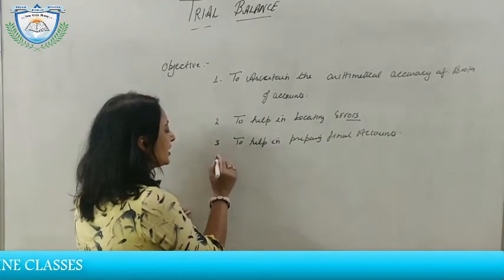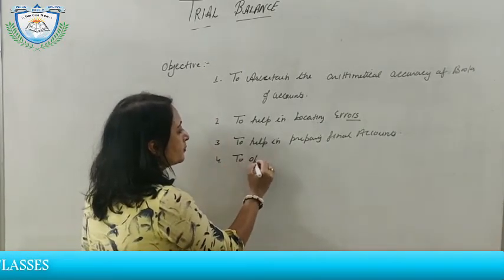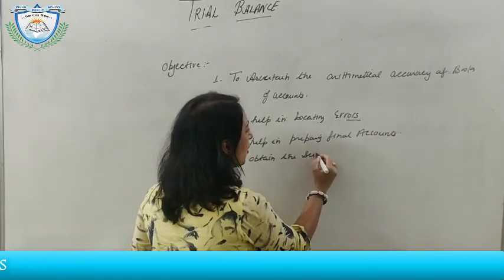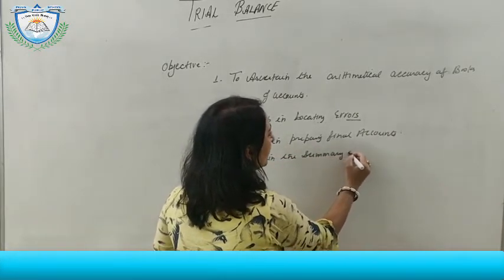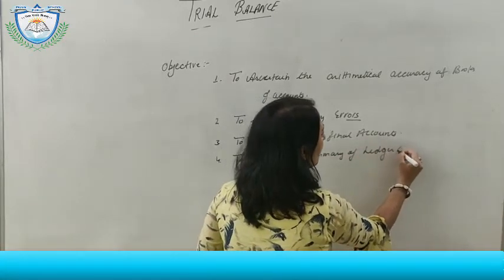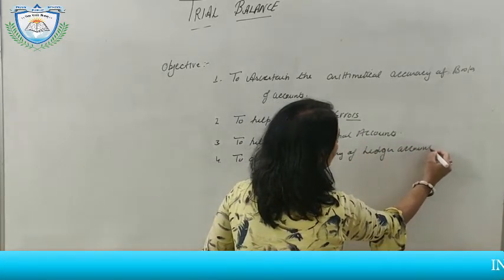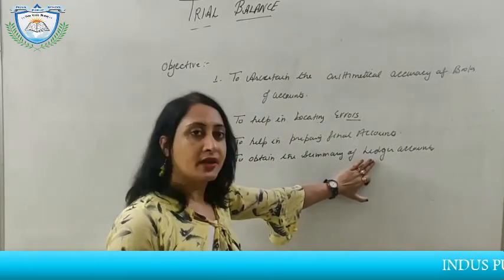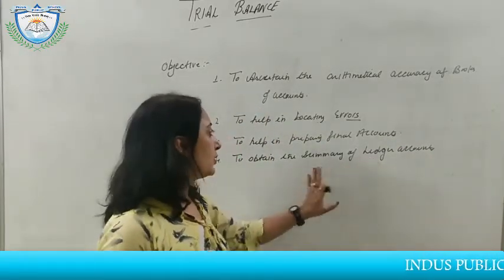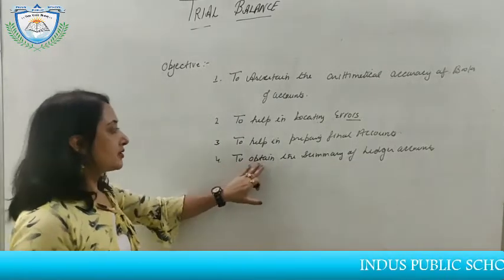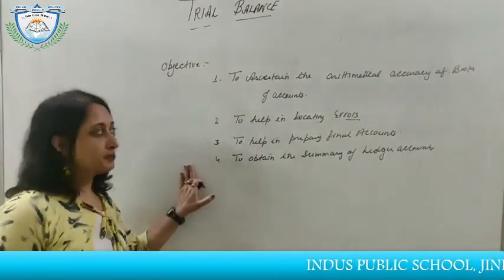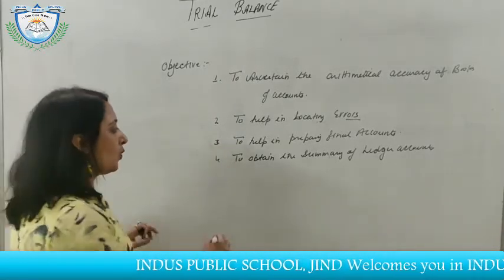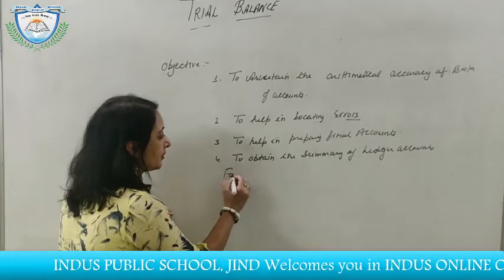The fourth object is to obtain the summary of ledger accounts. In the ledger we make all types of accounts. The trial balance serves as a summary of all those different ledger accounts. These are the four main objectives of the trial balance.